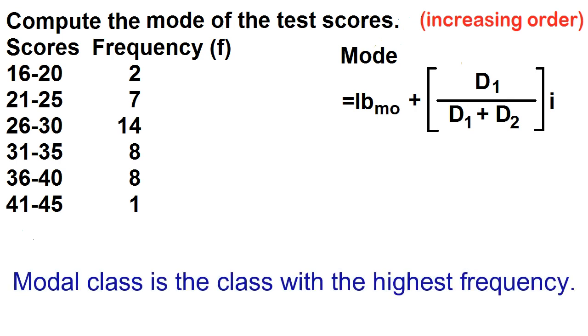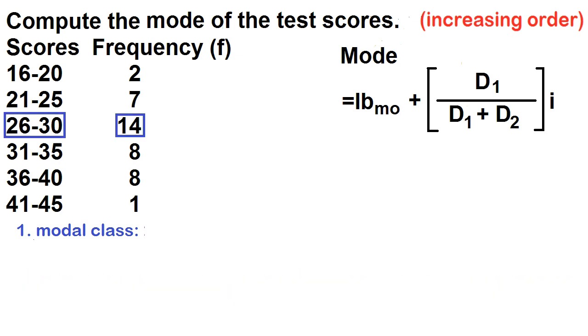What is the modal class? The modal class is the class with the highest frequency. In this grouped frequency distribution, the highest frequency is 14. So the modal class is 26 to 30. The lower limit is 26 and the upper limit is 30. The lower boundary of the modal class is just the lower limit minus 0.5. 26 minus 0.5 is equal to 25.5.